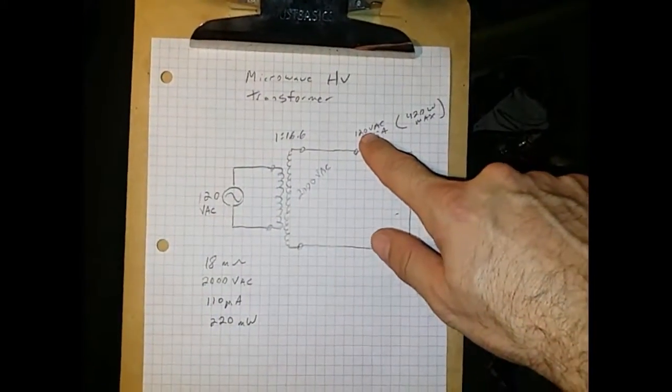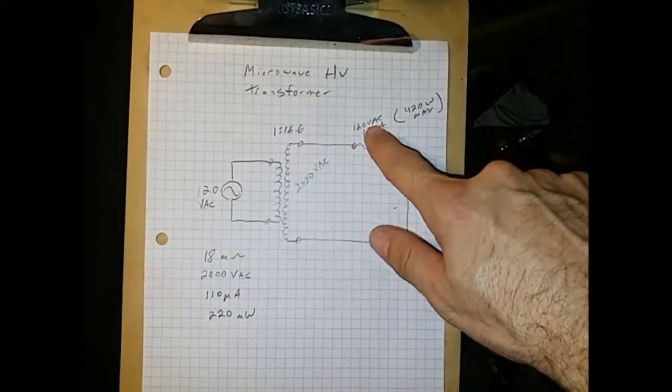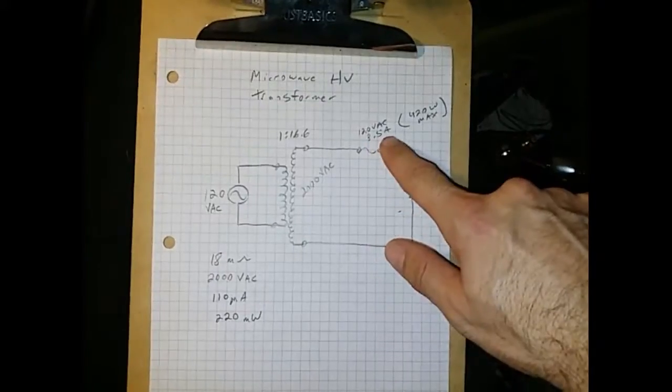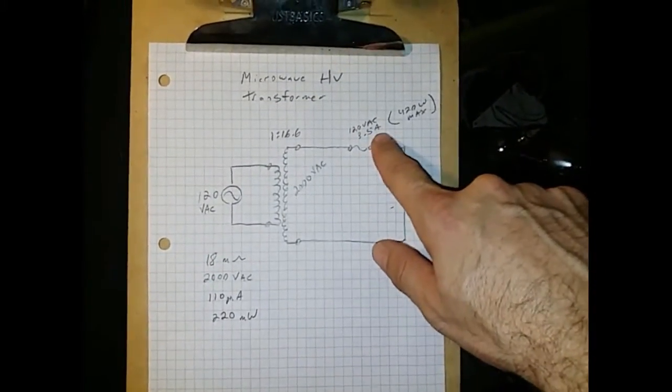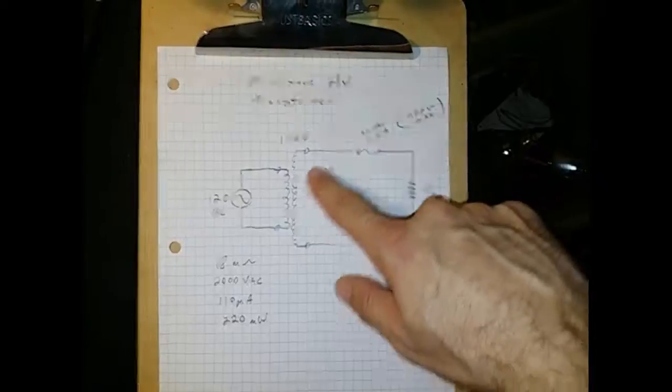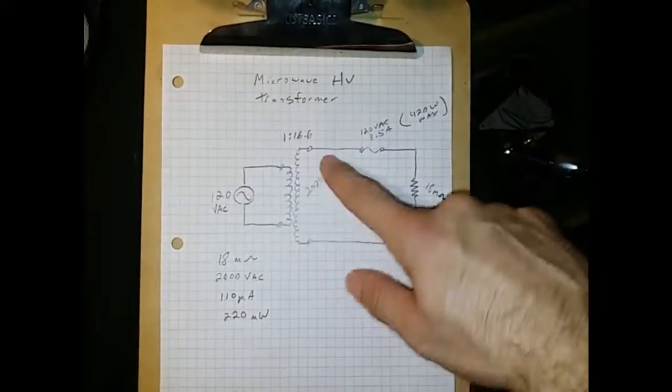I put a 120 volt AC fuse, that's a 3.5 amp fuse, so not a big fuse, not big voltage. 2000 volts is on the output.